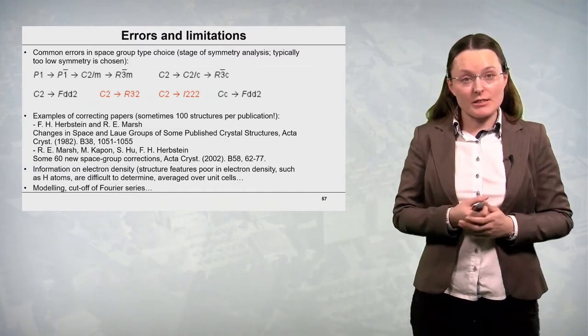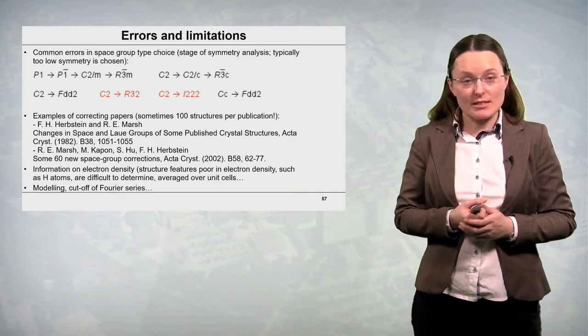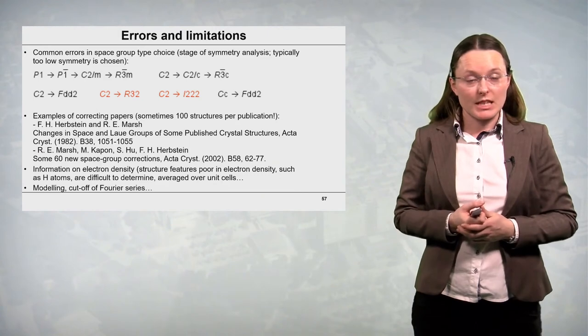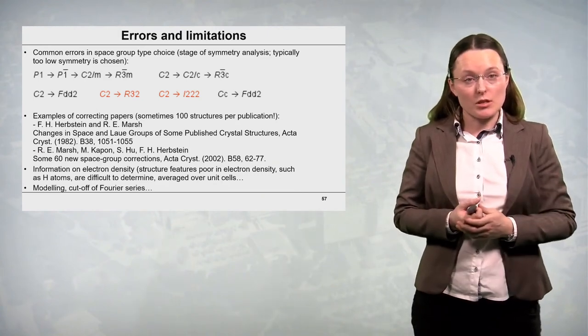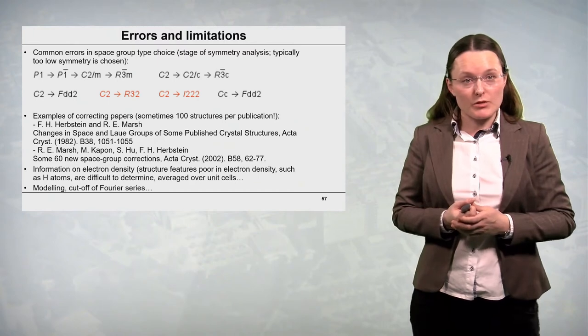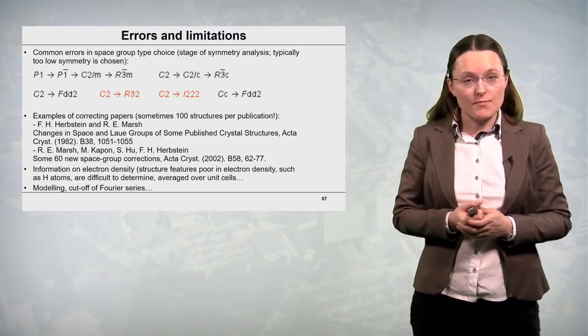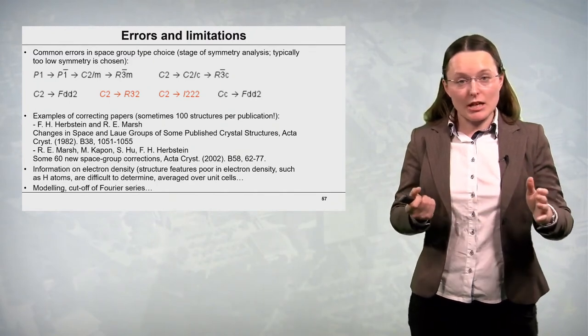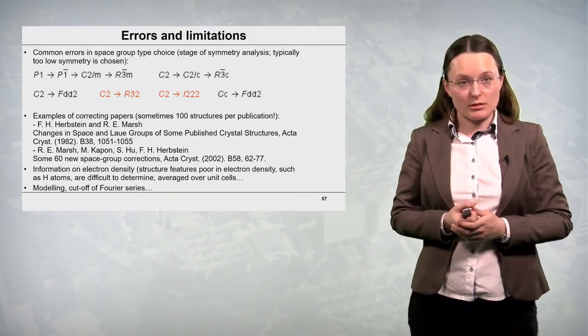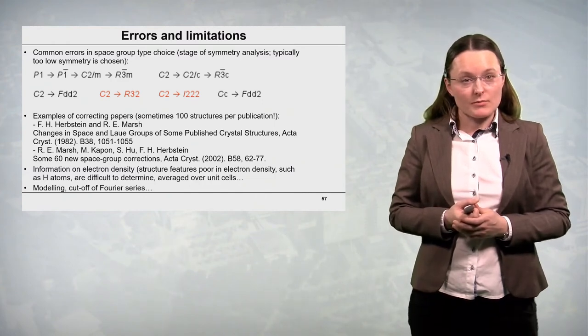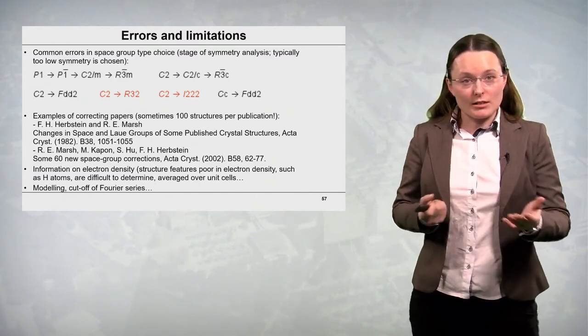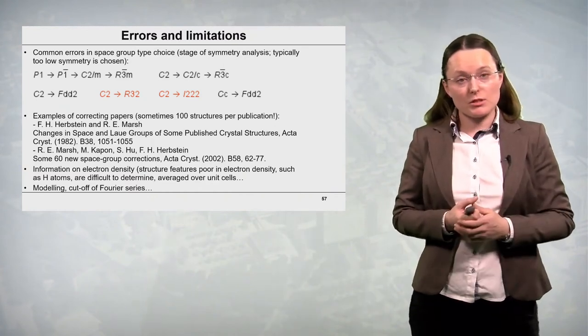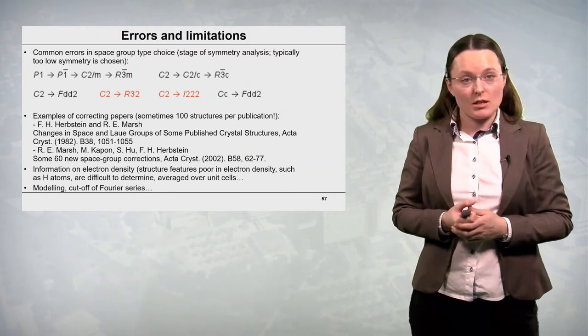There are crystallographers who actually specialize in detecting such structures and correcting them. And I also quote some examples of the correcting papers from 1982 and 2002. In such papers we can find sometimes 100 structures which have been corrected. So this fact that we can make many errors in this analysis is also connected with some limitations of the method.